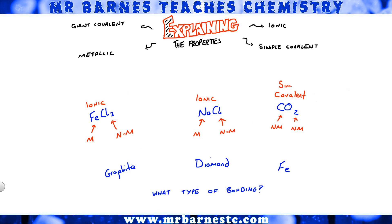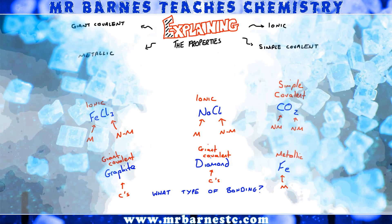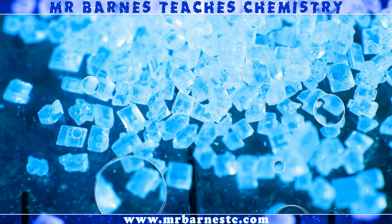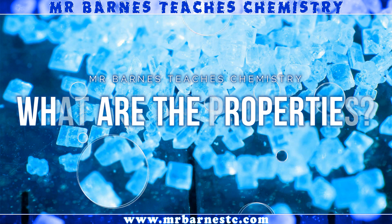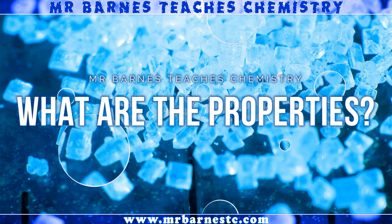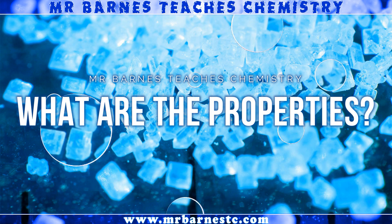CO2 has three atoms so it's simple covalent. Graphite is made up of thousands of carbon atoms all joined together, so it's giant covalent — same with diamond. Iron is a metal with only iron present, therefore it is metallic bonding. That's how you work out what type of bonding is going on. We now need to move on to the properties of all these chemicals.